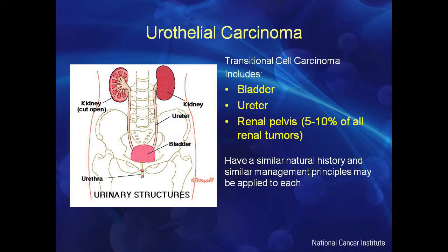Throughout this talk, I'll use the terms bladder cancer and urothelial cancer interchangeably. When we say bladder cancer, we really mean urothelial cancer — cancer of the urothelial tract, which can occur anywhere from the kidney, the ureters, to the bladder, to the urethra. It's more common in the bladder, but tumors can occur anywhere throughout the urinary tract, and their natural course and management are very similar.